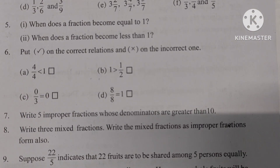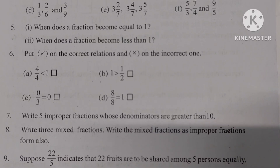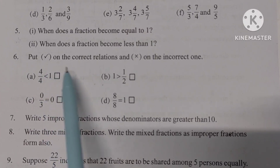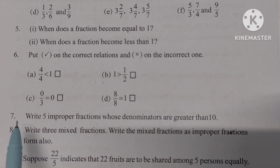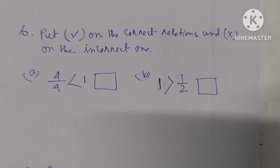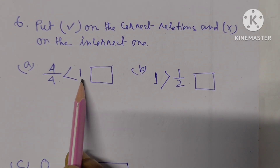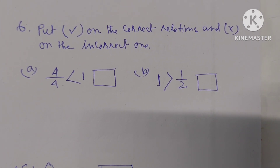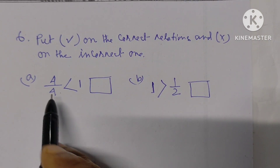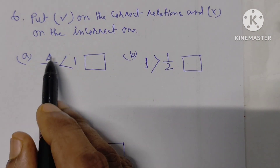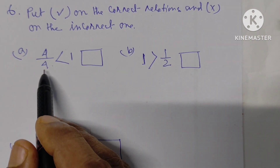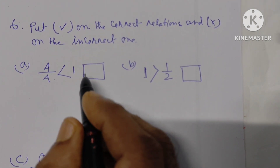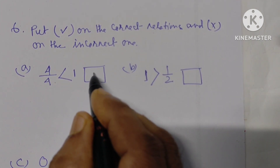Number 6: Put a tick on the correct relations and a cross on the incorrect ones. Number 6a: 4 by 4 is less than 1. The denominator 4 and numerator 4 are the same. We know that when the numerator and denominator are the same, the fraction equals 1. So this statement is wrong — it gets a cross.